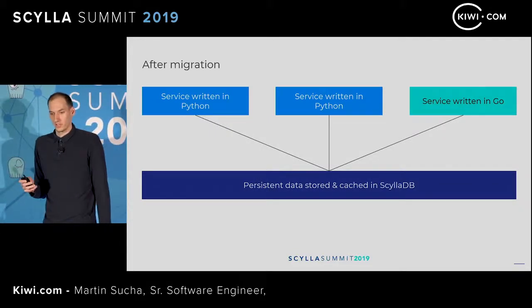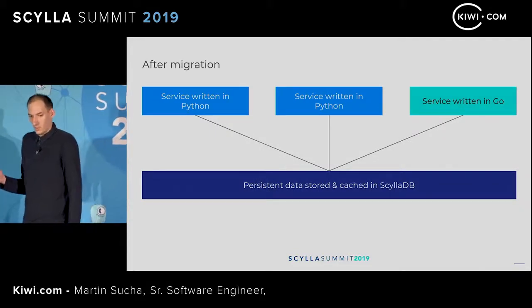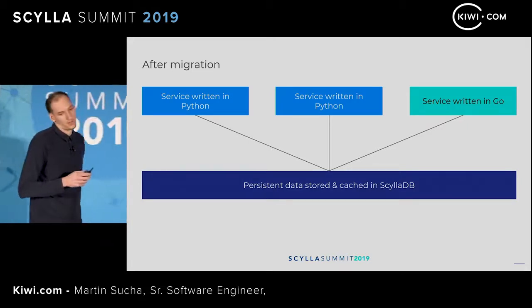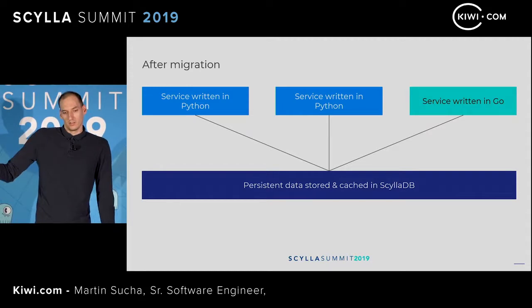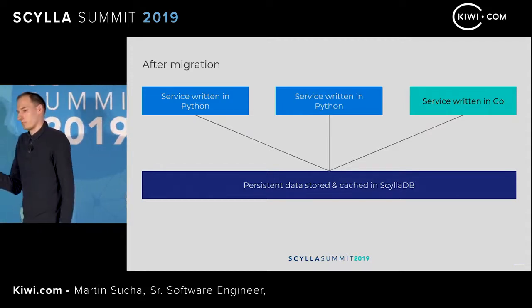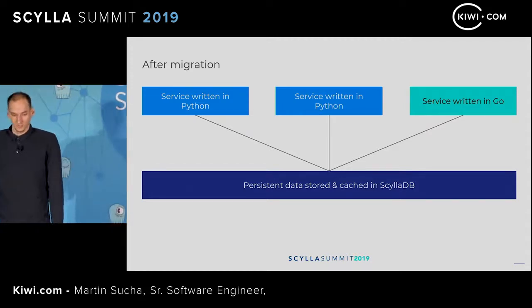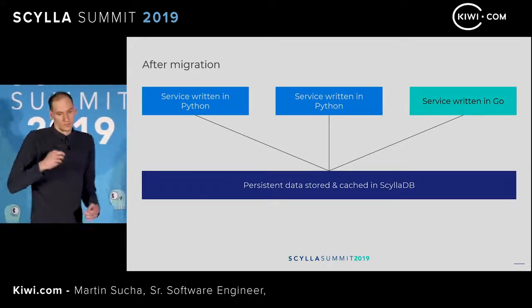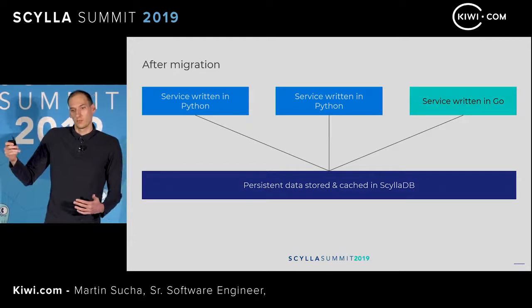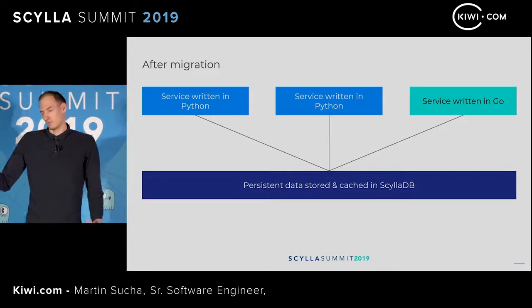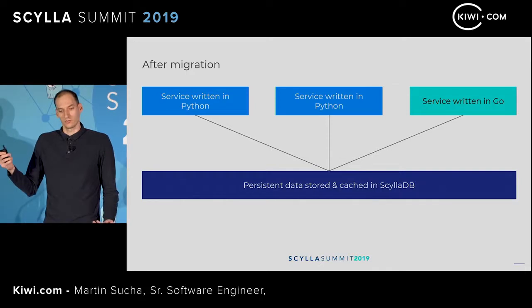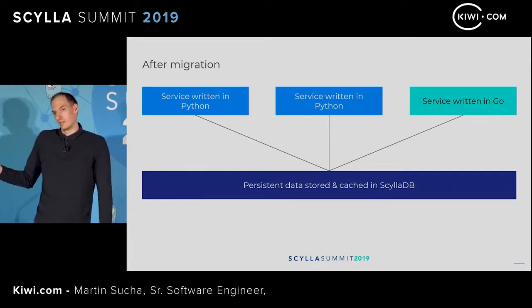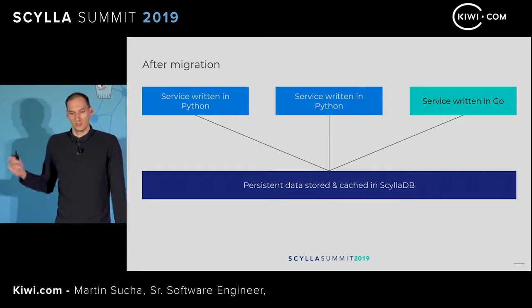After the migration, we got rid of the caching layer in Redis, as Scylla is able to cache all the data itself and provide us with consistent latency. So we saved on operations as we don't need to manage those Redis instances, and we also saved on cost as we don't need to pay for those servers.